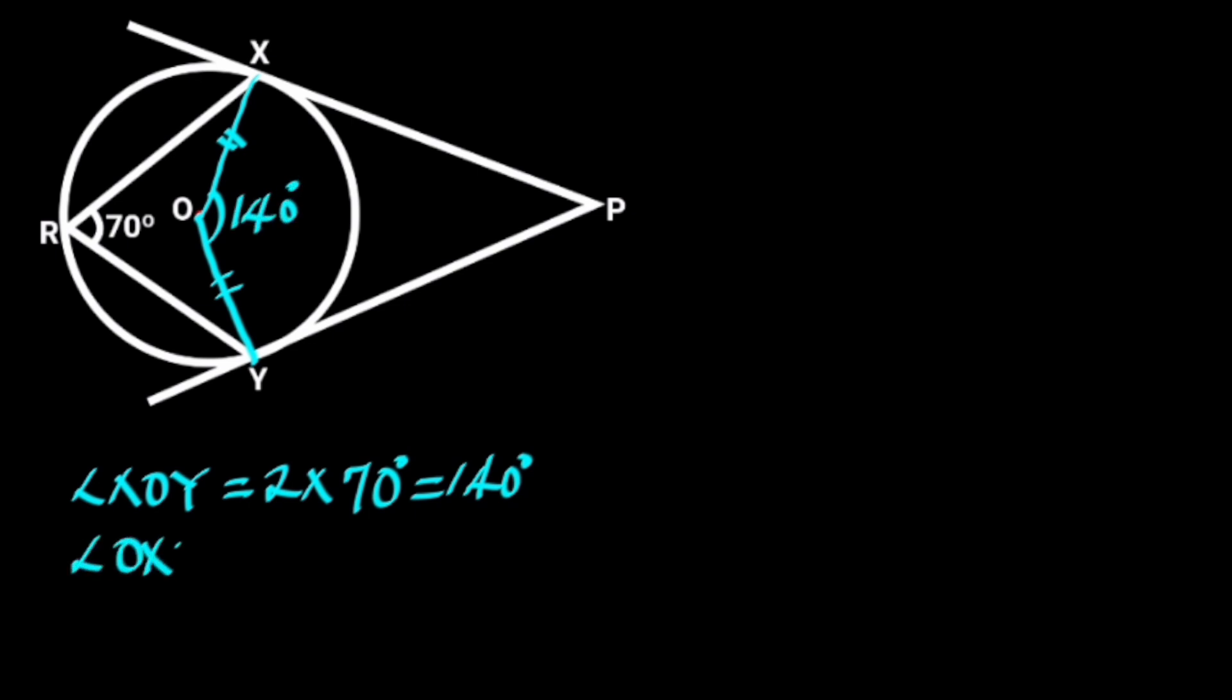Angle OXP equals 90 degrees. Reason: tangent is perpendicular to radius at the point of contact. Also, angle OYP equals 90 degrees for the same reason.